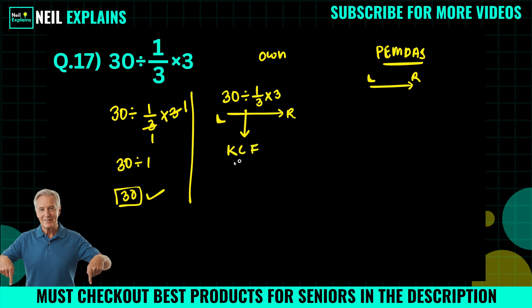We will use Keep-Change-Flip. We will keep 30 as it is, this division will be changed to multiplication, and we will flip 1/3 into 3/1 times 3. Now we will write like this: 30 times 3 times 3.